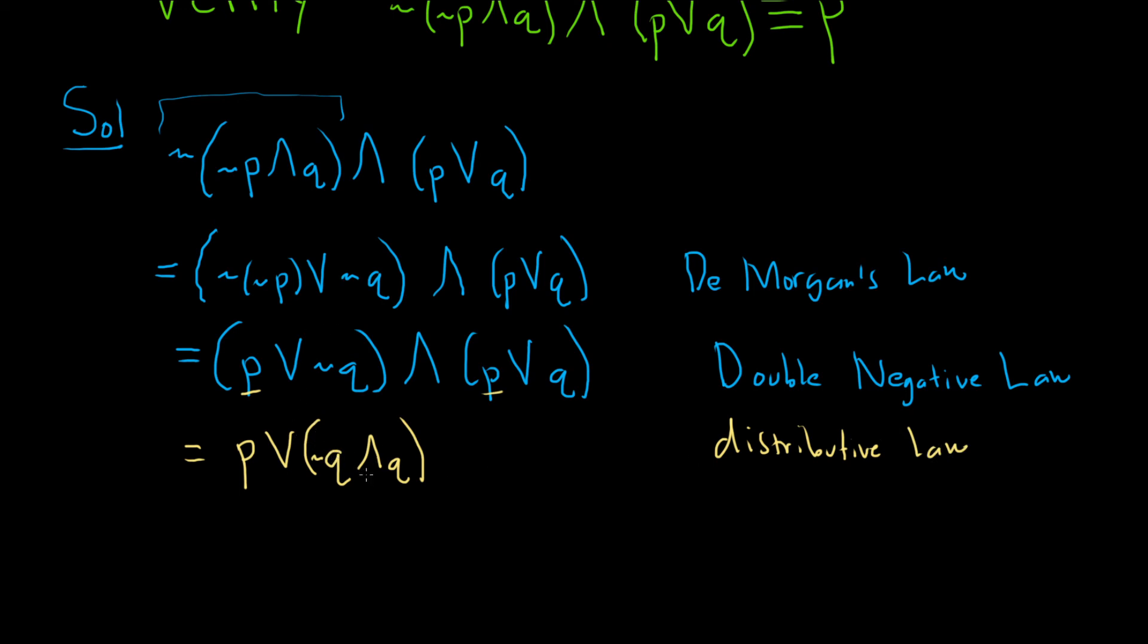And now we have the statement not q and q, which is the same as q and not q. In any case, this statement is a contradiction. So this is p or, and I'm just going to put a little c here where c denotes contradiction.